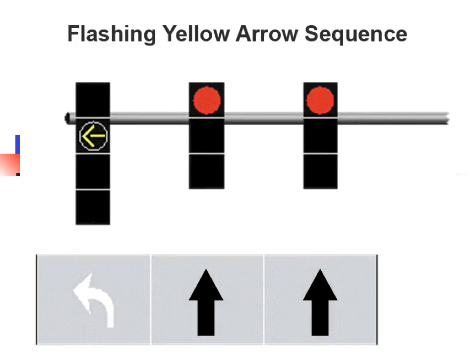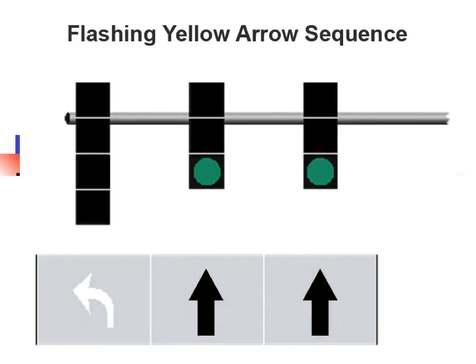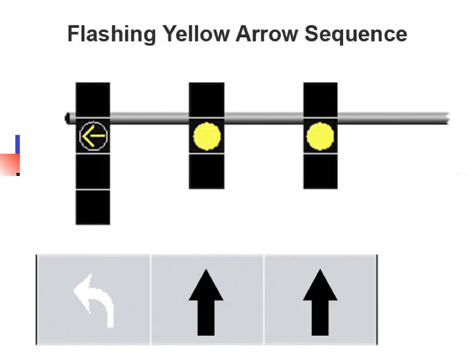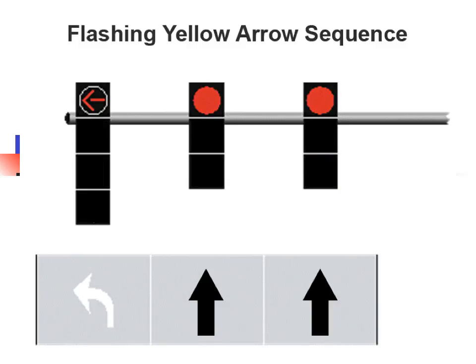A newer signal is the flashing yellow, which means yield when turning left. This is equivalent to the green ball, but frees the green ball to mean proceed for through movements, and allows a red ball in the through movement alongside a flashing yellow on the left turn — for instance, when there is an opposing green ball and a green left turn arrow.